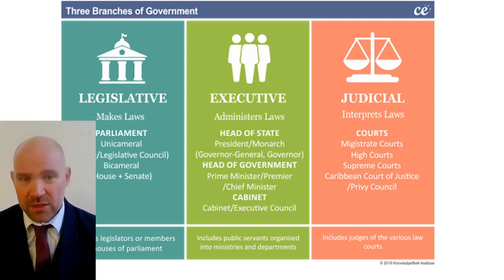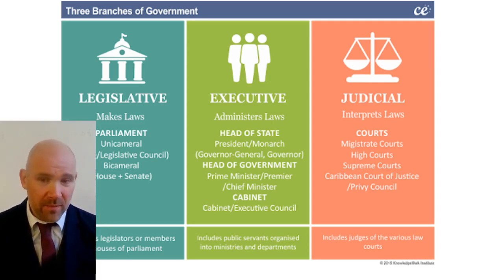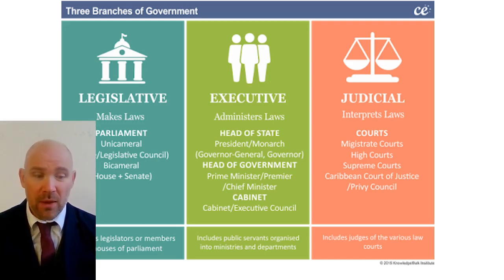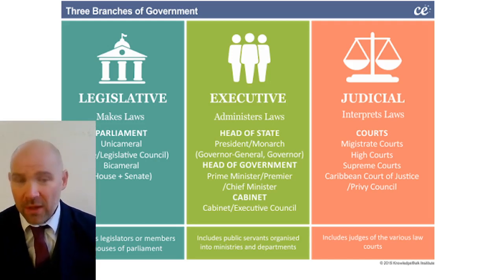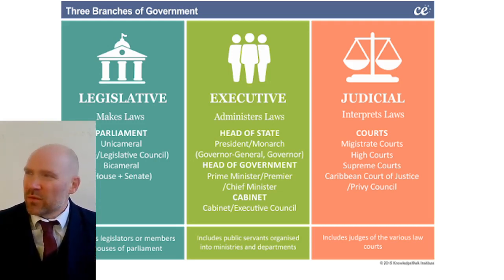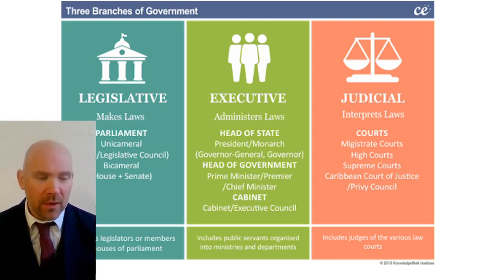The judiciary is also fairly straightforward because they interpret laws. When there is a question about whether something is legal or not, that is when the judiciary comes into play. For example, when Boris Johnson prorogued Parliament, there was a question about whether that was legal — whether he overstepped his powers. There's a Latin term for that: ultra vires, which we might look at later.